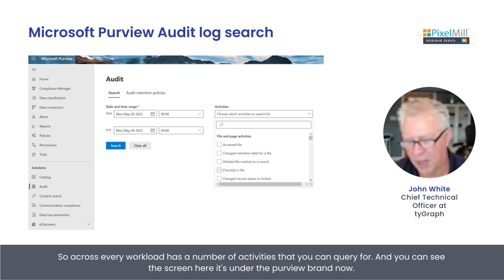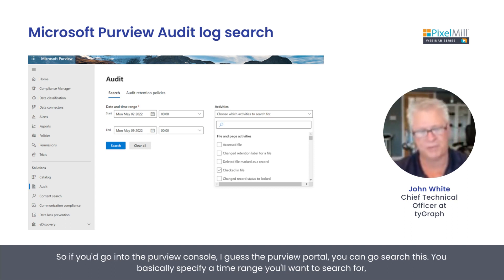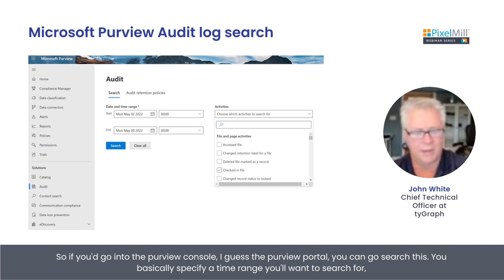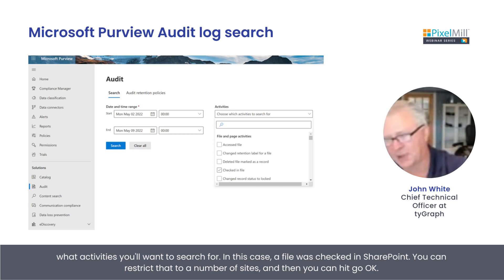And you can search it. Across every workload there are a number of activities that you can query for, and you can see the screen here. It's under the Purview brand now. So if you go into the Purview portal, you can search this. You basically specify a time range you want to search for, what activities you want to search for — in this case, a file was checked in in SharePoint. You can restrict that to a number of sites, and then you can hit go.